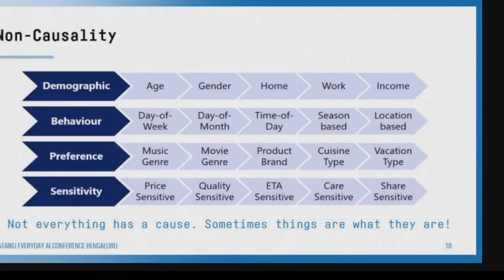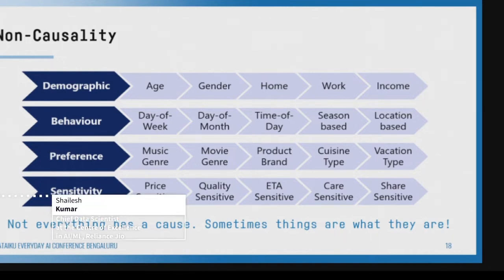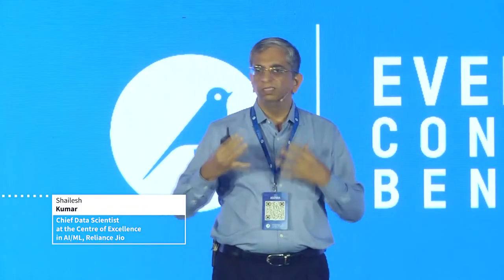For a customer, there is no causality. What are his preferences? He likes this music, that music, this food, that food — what is he sensitive to? Sometimes there is no causality. This is the zero of causality.